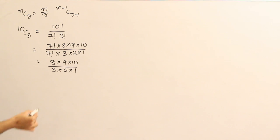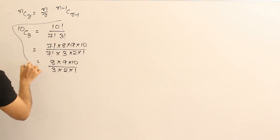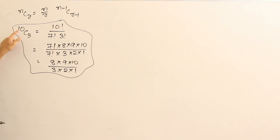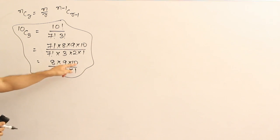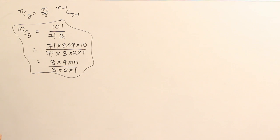Just keep this in mind. One way to write 10C3 is: from 10 you go down for 3 terms, and you expand 3 factorial. So that is how we can find out 10C3.